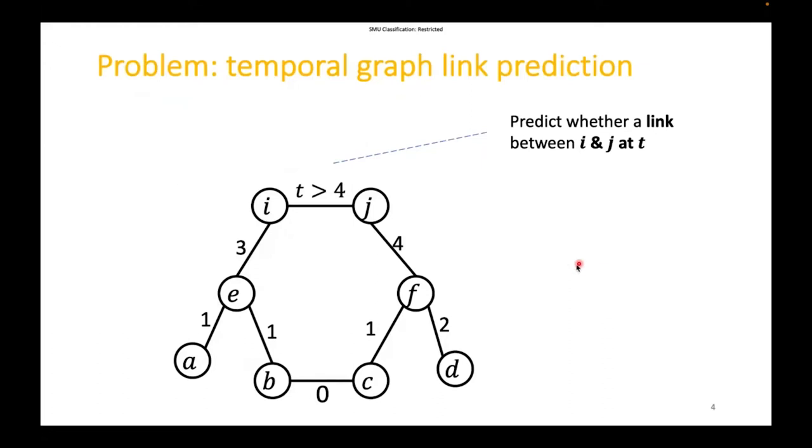Here is a toy temporal graph of research collaborations that evolves through time. Each node is a researcher and each link is a collaboration between researchers formed at a specific time. Our main task here is temporal link prediction. In other words, we need to predict whether there will be a link between node i and node j at future time t.